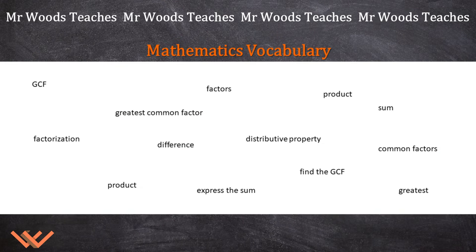With the greatest common factor, you have to know some vocabulary. GCF stands for greatest common factor. You need to know what factors are, what a product is, some common factors, what greatest means, express the sum, product, factorization, difference, distributive property. Pause this, write one term at a time down, look it up, write down the definition, and write one to two examples so that it gets into your mindset inside of that composition book. It's separate from your math book and math notebook — this is your vocabulary reference.